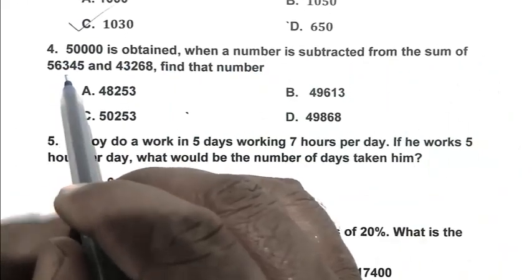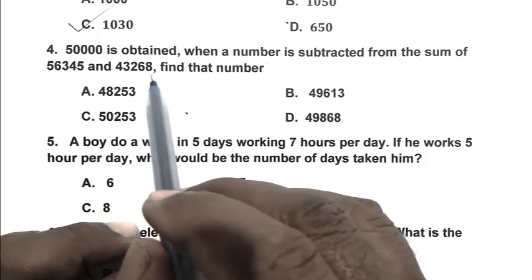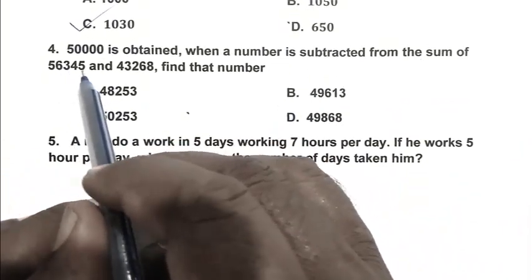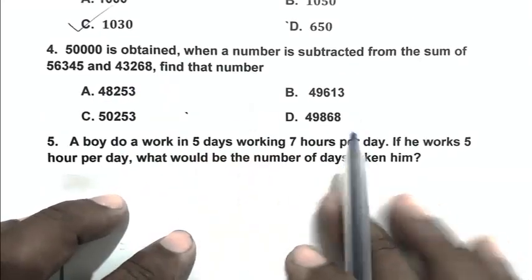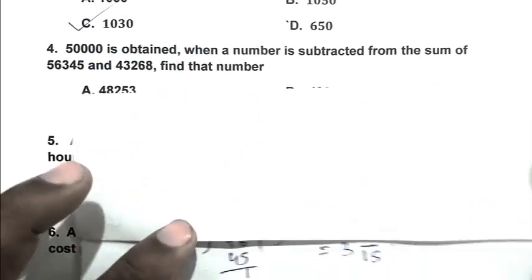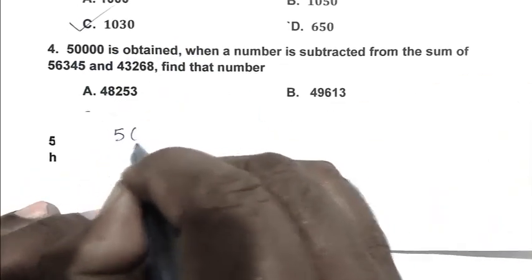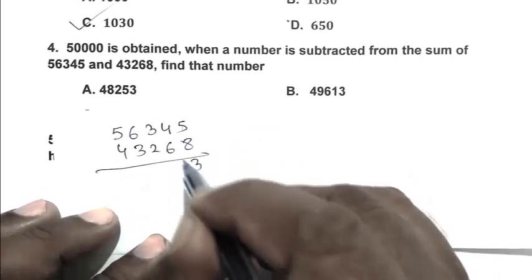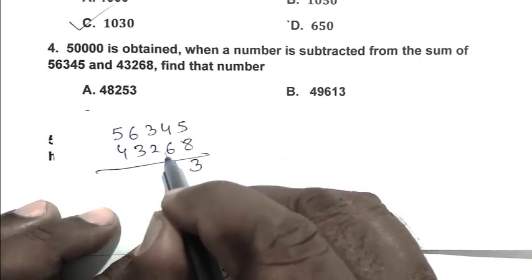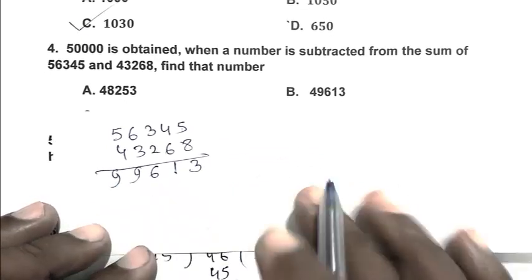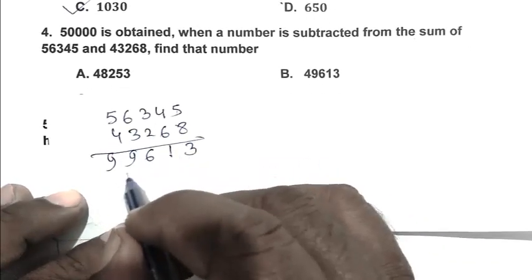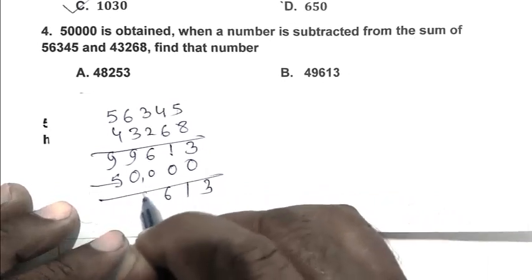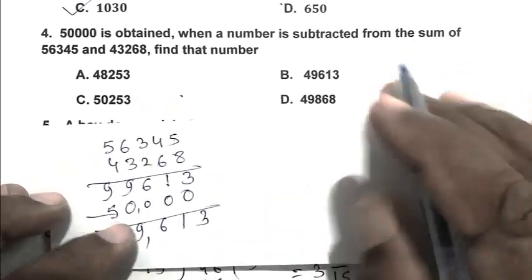Question number four: 50,000 is obtained when a number is subtracted from the sum of 56,345 and 43,268 — find that number. First we add 56,345 and 43,268 to get 99,613. After that we subtract 50,000 from that resulting number, so we get 49,613. B is the right answer.